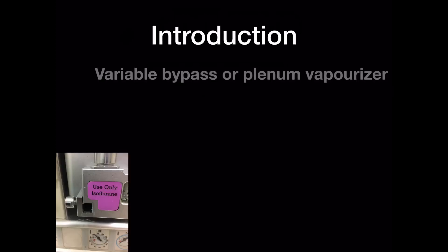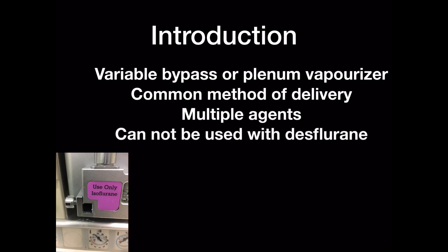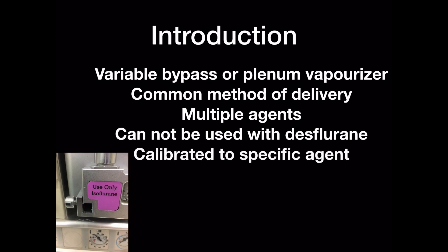A variable bypass or plenum vaporizer is a common method of delivery of volatile anaesthetic agents. It can be used safely with sevoflurane, isoflurane and halothane. It cannot be used with desflurane, and we will cover the reason for this in a subsequent tutorial. Each vaporizer is calibrated to a specific anaesthetic agent and cannot be safely interchanged between agents due to their differing physico-chemical properties.